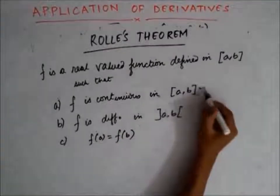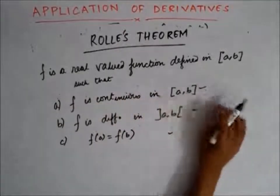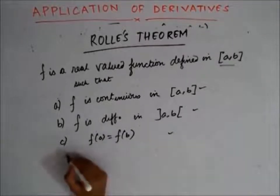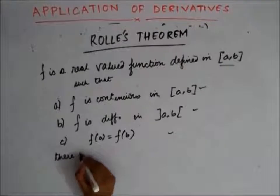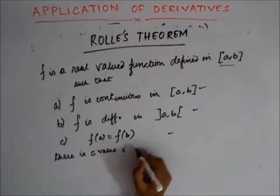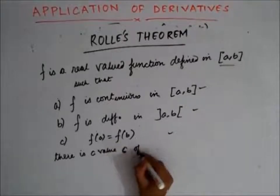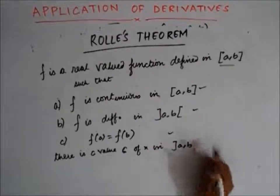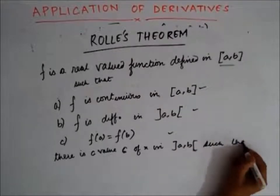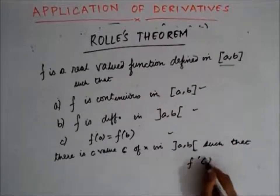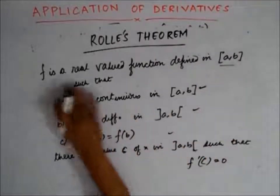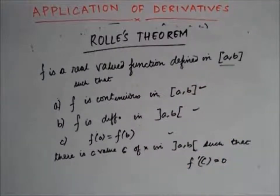If these three conditions are satisfied and f is a real valued function in the closed interval a to b, then the conclusion is that there is a value c of x in the open interval a to b such that f'(c) is zero. Given that these three conditions are satisfied, f'(c) is equal to zero.